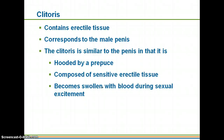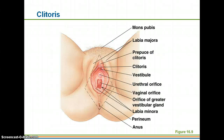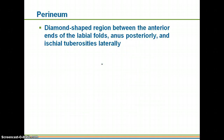In developing embryos, an embryo will have what's called an indifferent penis. That will either turn into the clitoris, if it's a female, or a penis, if it's a male. Here is the clitoris. The perineum is going to be the diamond-shaped region.